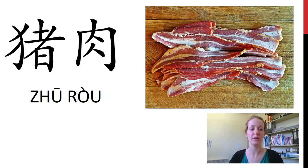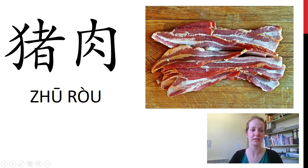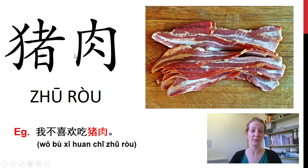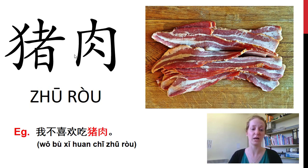猪肉. So this is actually pork — here we have bacon in the picture, but it was hard to get a suitable image. 猪肉 is the general word for pork. Remember our 猪. How do we say we don't like pork? 我不喜欢吃猪肉. I don't like to eat 猪肉 — pork.